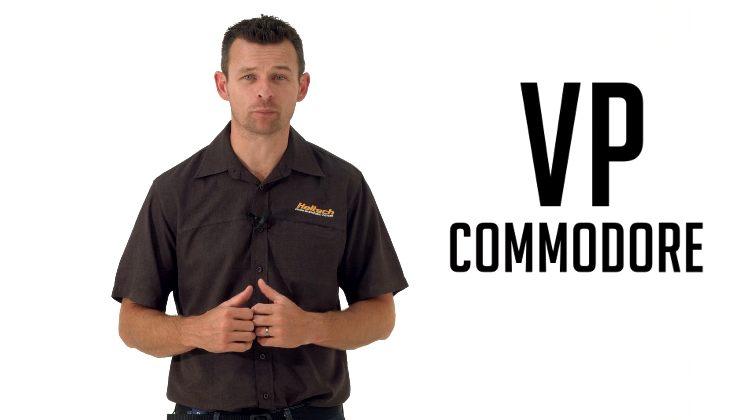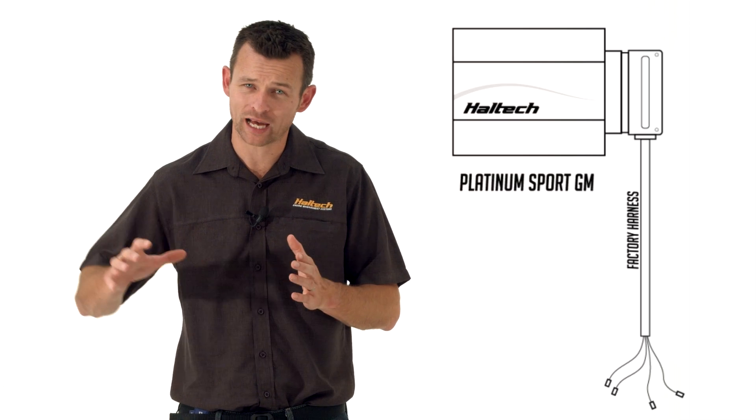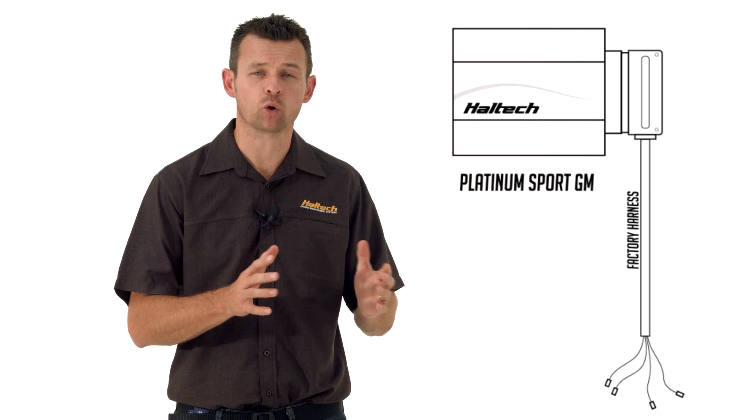If you've got a VN or VP Commodore, then the Haltech Platinum Sport GM ECU will plug directly into the OEM Holden wiring harness.